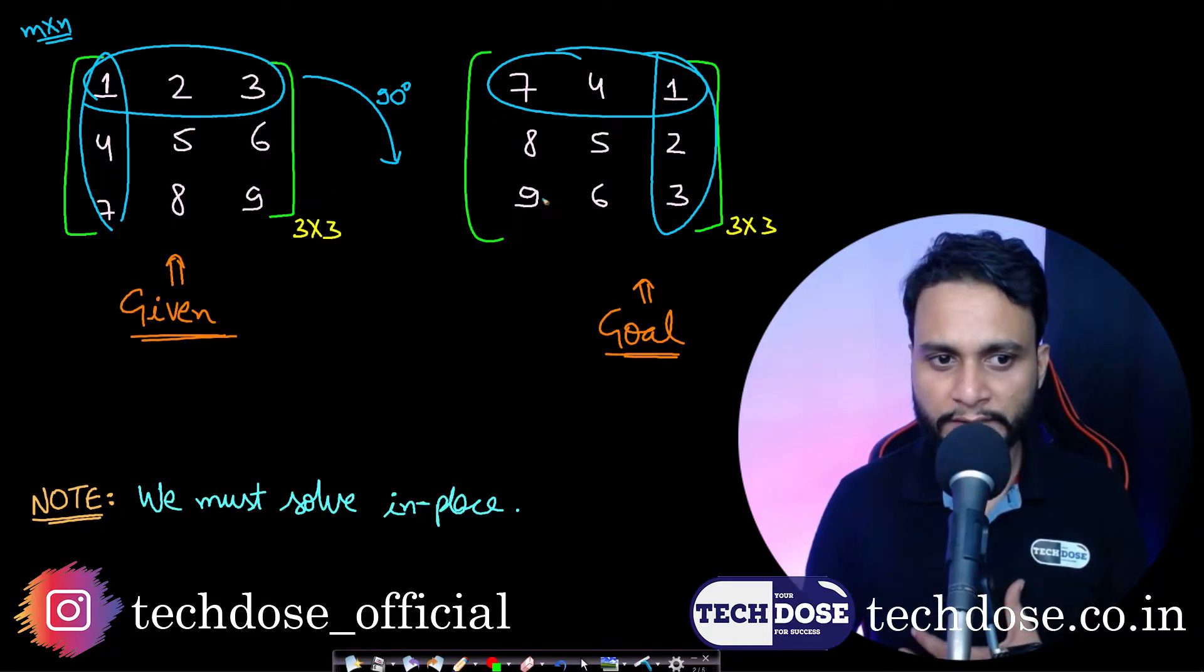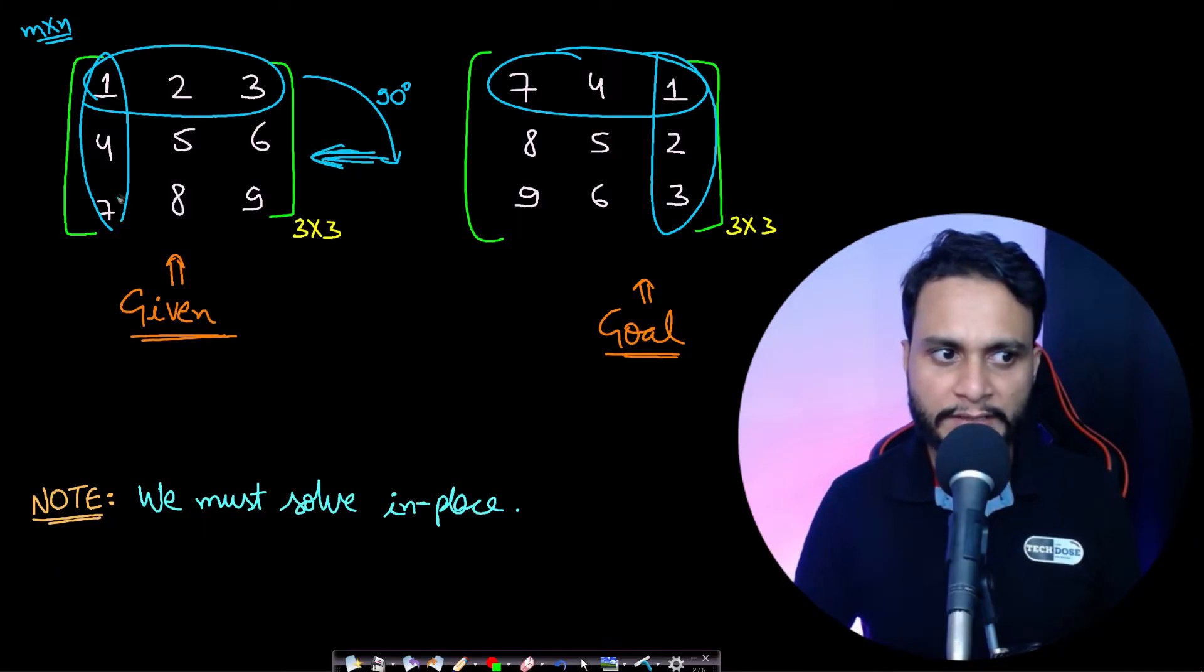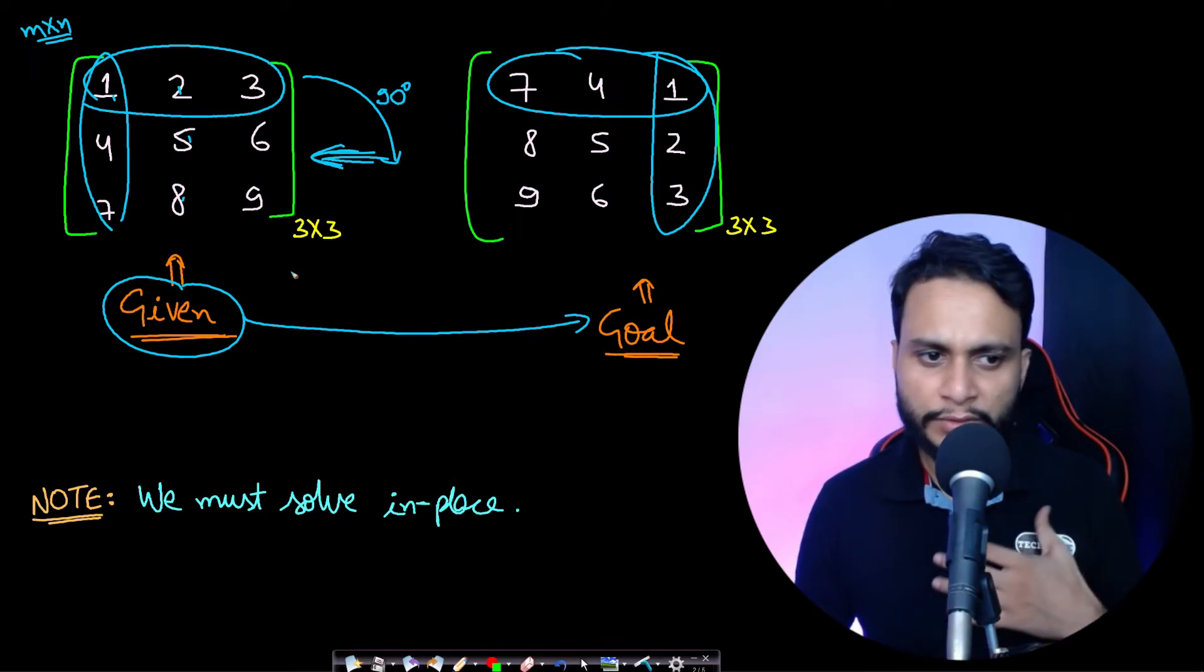You can view in this direction and you will see that 7-4-1 will be the first row, 8-5-2 will be the second row, and 9-6-3 will be the third row. So from the given matrix we want to reach to our goal matrix, which is the target, it is the rotated form.